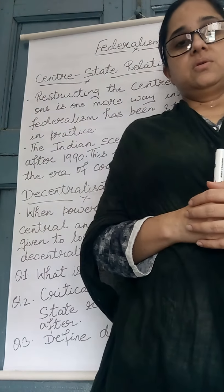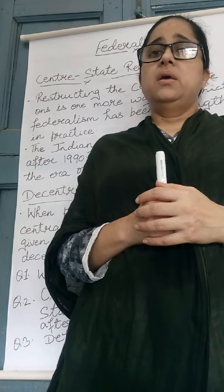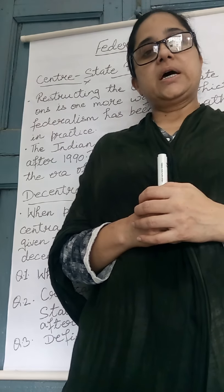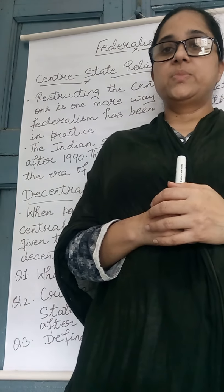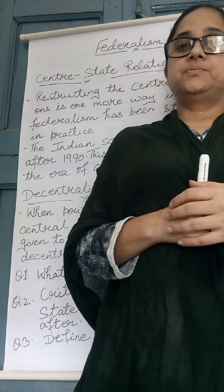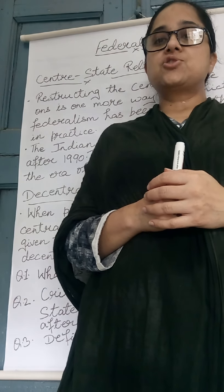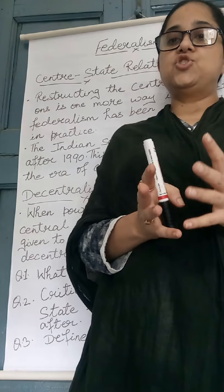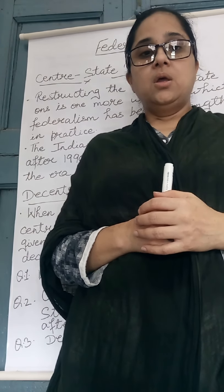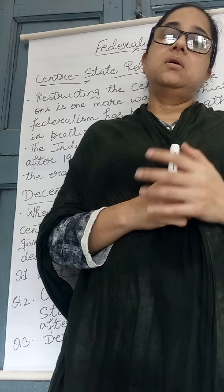What are the reasons for decentralization? Why was this decentralization made? India is a very big country. India cannot be run only through two tiers — that is central and state. The states in India are as large as independent countries of Europe in terms of population. Uttar Pradesh is bigger than Russia. Maharashtra is about as big as Germany. Many of these states are internally very different as well.